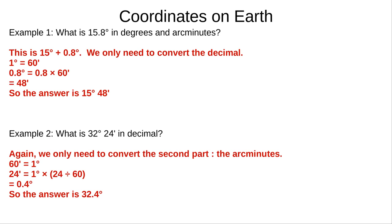Example 1: 15.8 degrees is 15 degrees plus 0.8 degrees. Since 1 degree is 60 arc minutes, 0.8 degrees is 0.8 times 60 arc minutes, or 48 arc minutes. Add that to the 15 degrees, and we get 15 degrees and 48 arc minutes. Example 2: We need to convert the 24 arc minutes into a decimal. Since 60 arc minutes is 1 degree, 24 arc minutes is 1 degree times 24 sixtieths, or 0.4 degrees. Add that to 32 degrees, and we get 32.4 degrees.